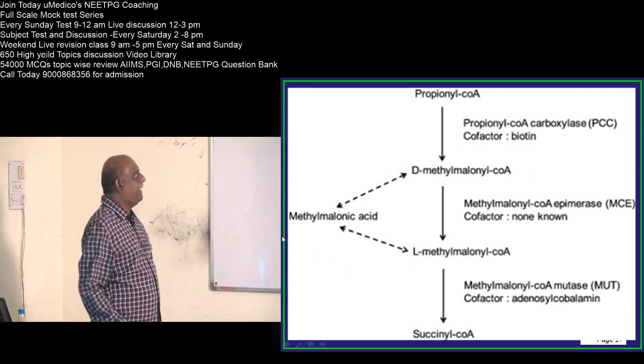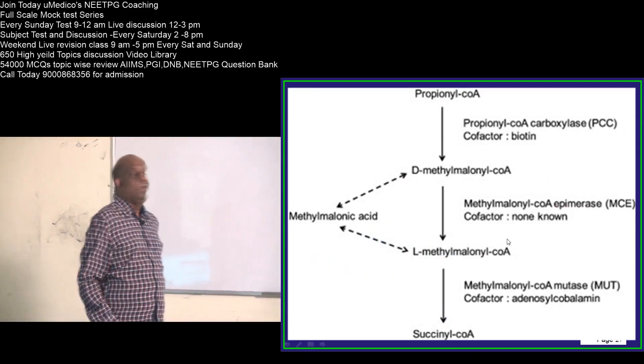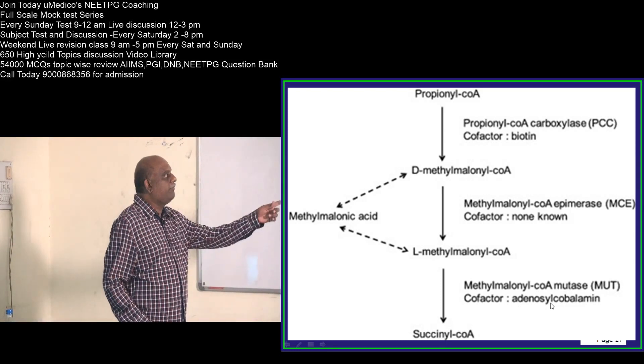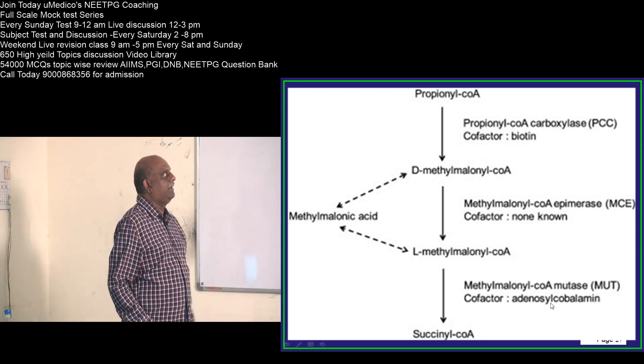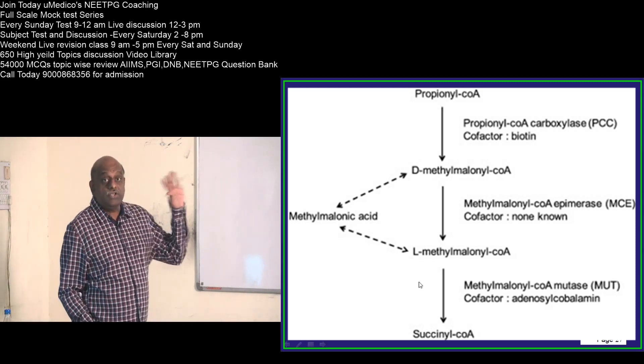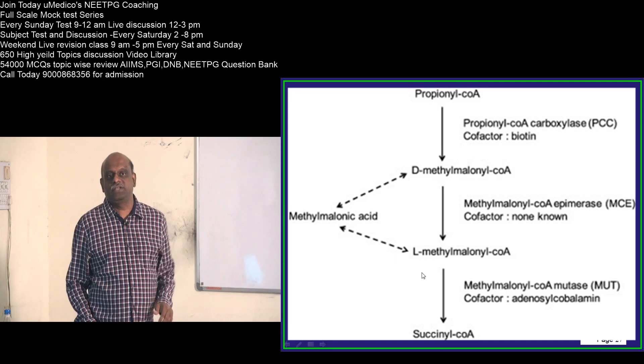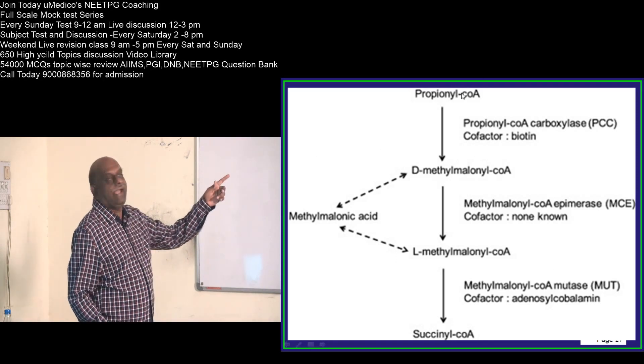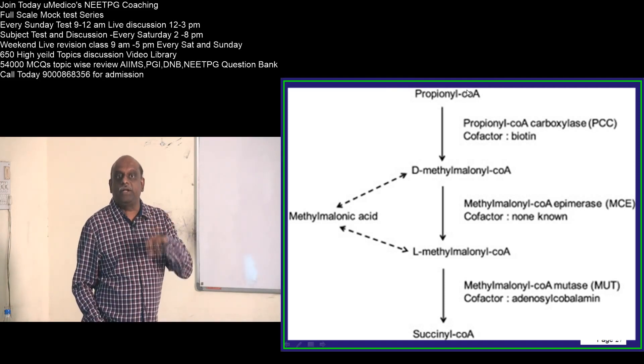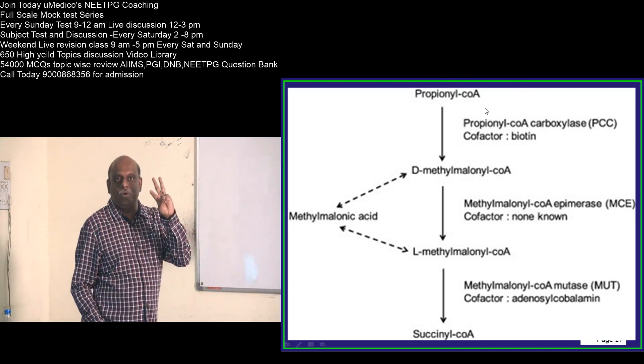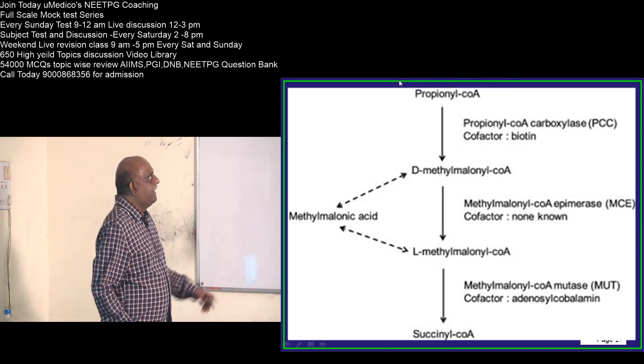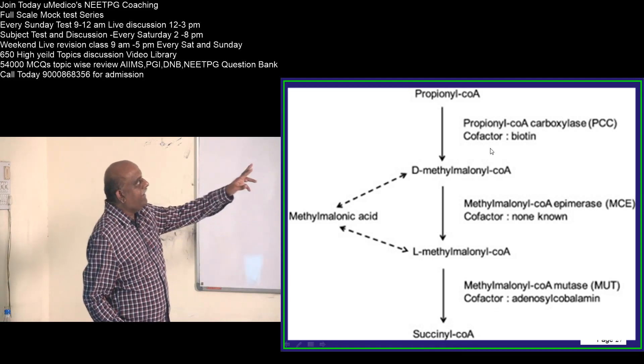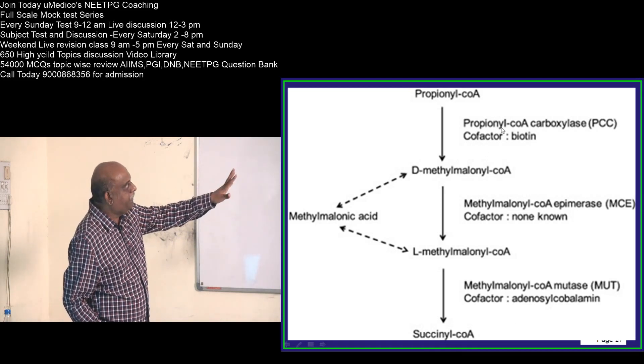So this is the place where you require it. Then the second important thing is methyl malonyl-CoA mutase. For this also, cofactor is vitamin B12. And where do you require this? Odd chain fatty acids. If you want to metabolize them, you require it. Odd chain fatty acids, instead of giving acetyl-CoA which is a 2 carbon CoA, they will be giving 3 carbon CoA at the end, propionyl-CoA.